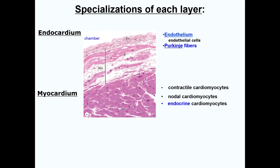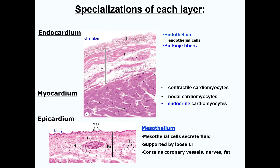Next, we have the myocardium, which is a functional syncytium of striated cardiac muscle fibers. These fibers make up atrial muscle, ventricular muscle, and specialized excitatory and conductive muscle. It also contains specialized cardiomyocytes that have endocrine function. The epicardium contains coronary vessels and nerves necessary for cardiac function, as well as fat that cushions the heart. This layer is much thicker in the ventricles, another distinguishing characteristic between these two heart regions.